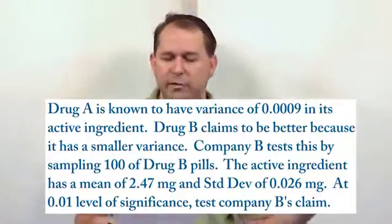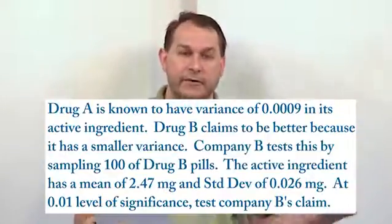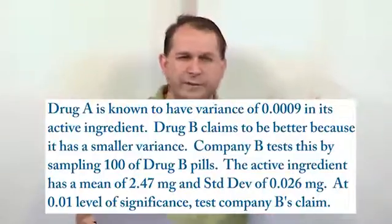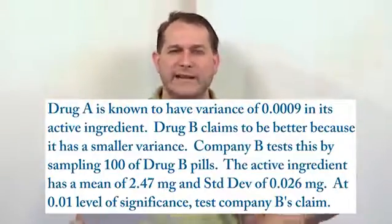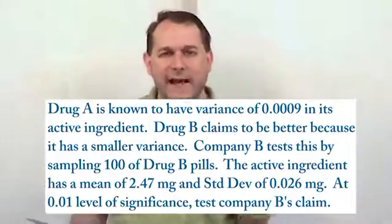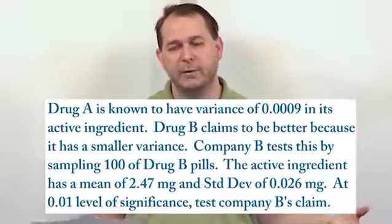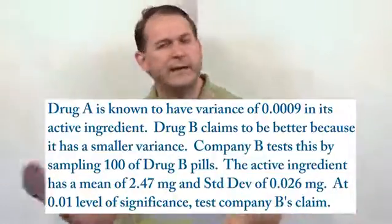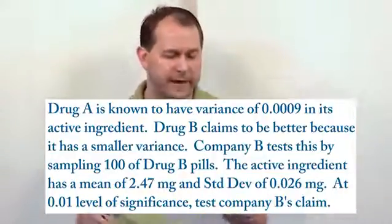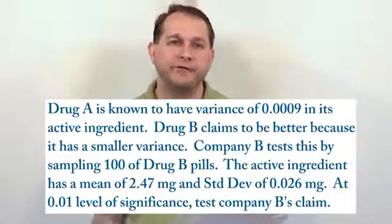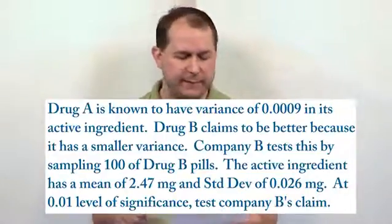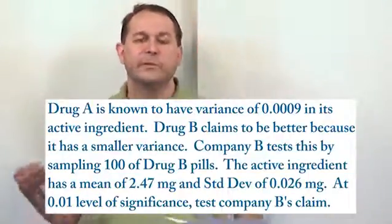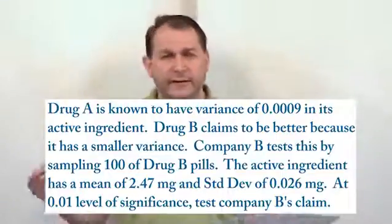In this problem, Drug A has a known variance of 0.0009. Variance basically measures, from pill to pill, how much minute differences there are in the active ingredient. You're not going to get exactly the same amount of active ingredient in every pill down to many decimal places. So variance represents the spread among all of Drug A's pills. Drug B claims to be better because it has a tighter or smaller variance. They take 100 pills, measure the active ingredient, and we have to use a hypothesis test to determine with statistical significance whether Drug B is really better.